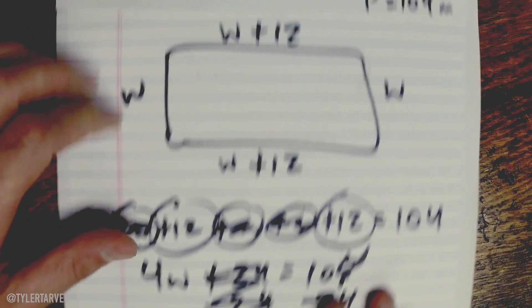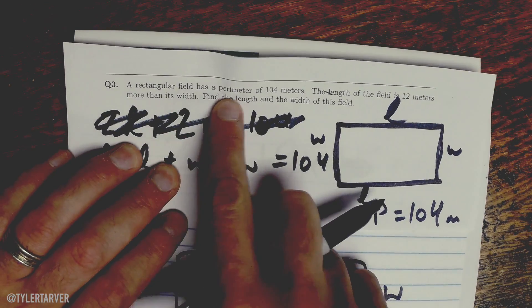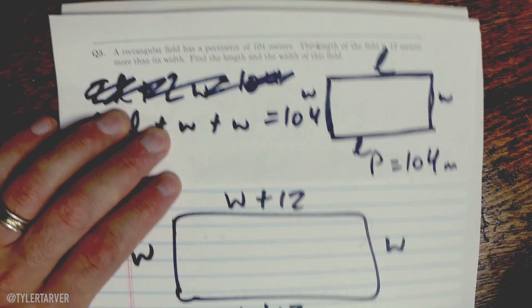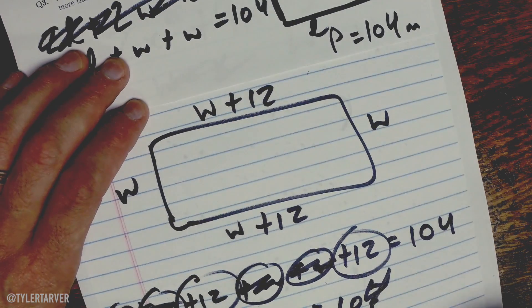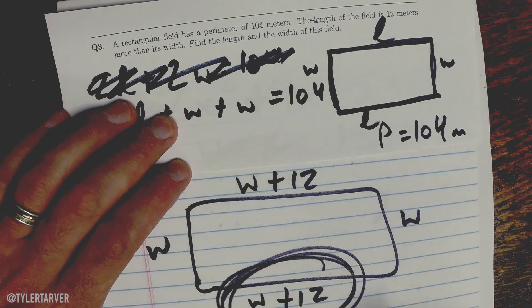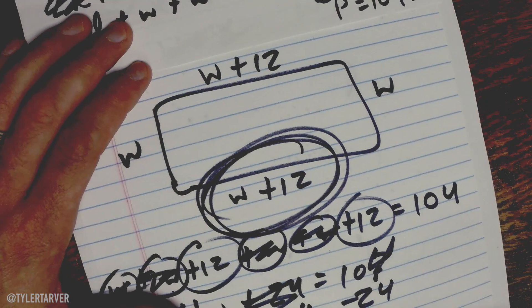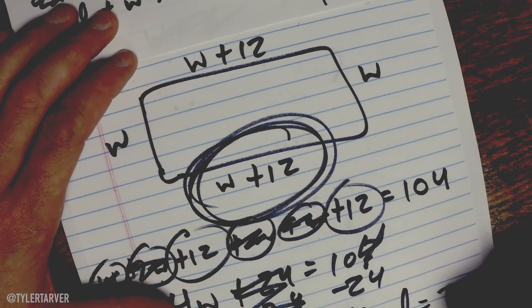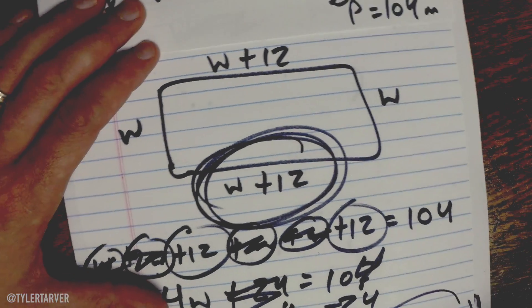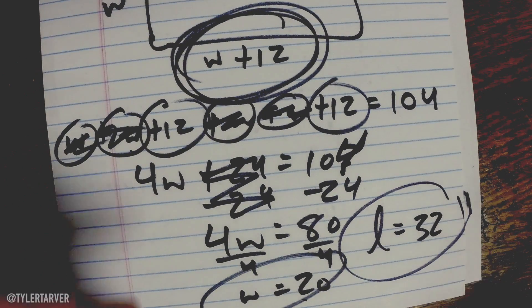Just kidding. Read the problem. Find the length and the width of this field. We know the width is 20. What do I know about my length? It's my width plus 12. So 20 plus 12 is 32. Found both the answers they want. And you're rocking and rolling.